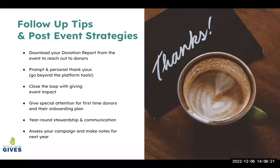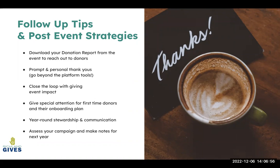First things first, you're going to want to download your donation report from this year's event. You can find that within your organization profile, where you can view all your donation reports and your disbursements. Once you download a detailed donation report, you can start to organize it and send follow-up emails to your individual donors, or call them if you collected phone numbers. You can find all that under Reports, then All Donations, and filter specifically by this year's giving event.